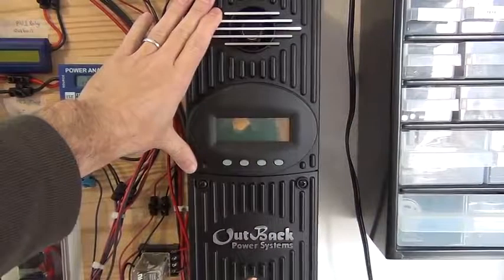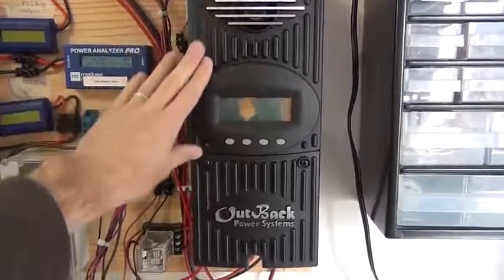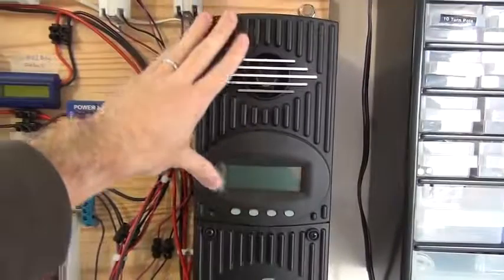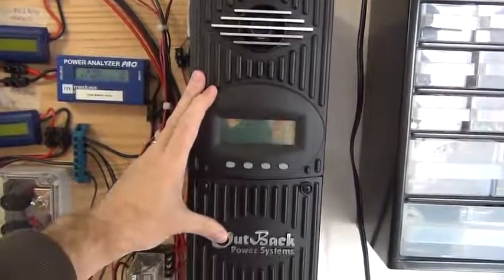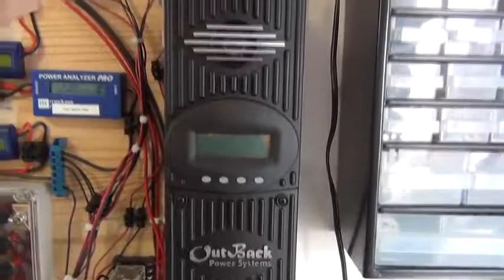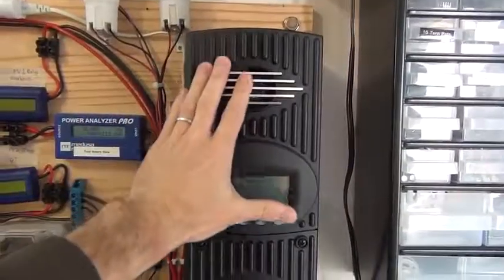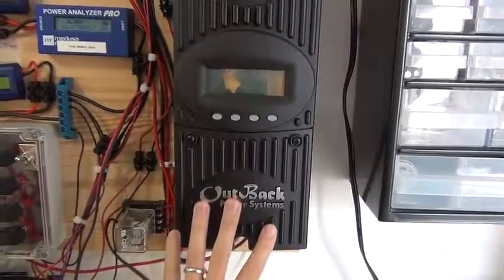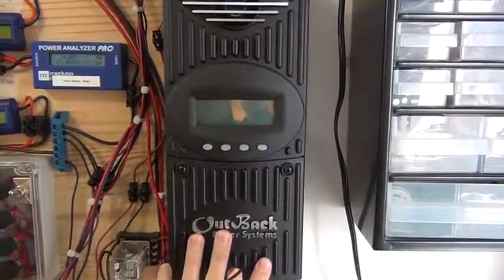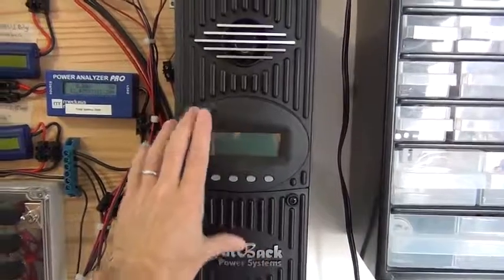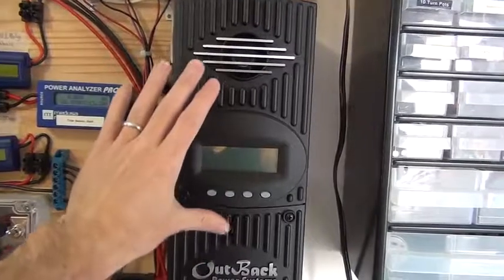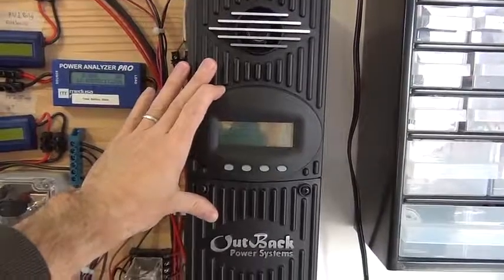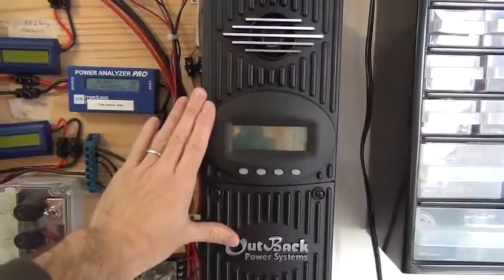This is an MPPT charge controller—a maximum power point tracking charge controller. This device is especially useful in off-grid systems as it takes power from the solar panels, does a DC to DC conversion so it's at the right voltage for your battery bank. This can't supply power directly to your house, which is why it's more useful in off-grid systems.